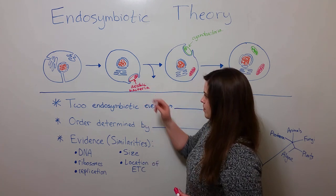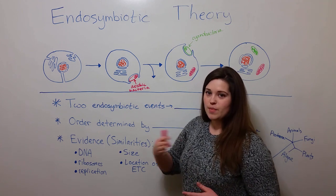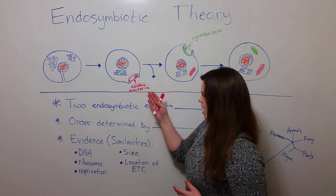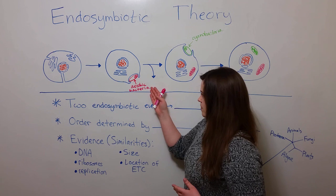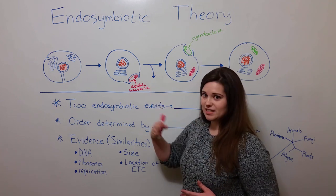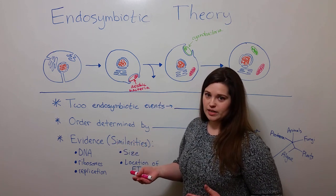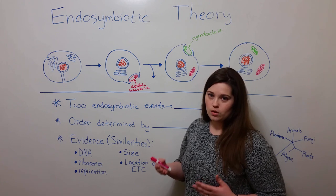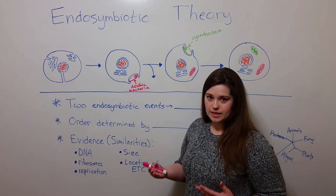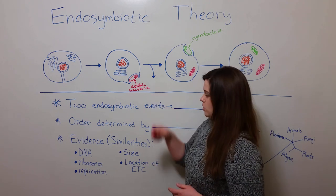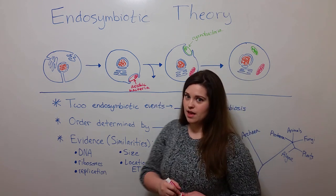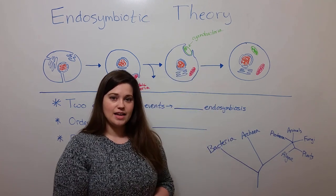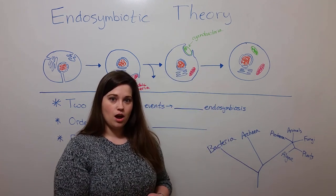After this aerobic bacterium was engulfed, many, many generations went by, and over time this bacterium and its descendants lost the ability to live independently, and they became full internal symbionts of the larger host cell. This led to the organelle that we know of as a mitochondrion.